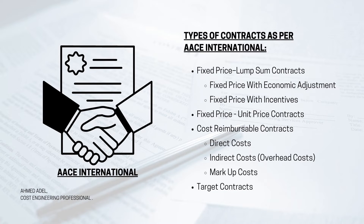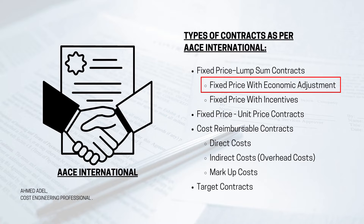We can add two small variations: fixed price with economic adjustment, and fixed price with incentives. With economic adjustment, it's still a lump sum contract — say 40 million — but if the price of steel varies by more than an agreed percentage (e.g., 15%), the contractor can claim additional money because the steel price exceeded what was considered at the time of signing.